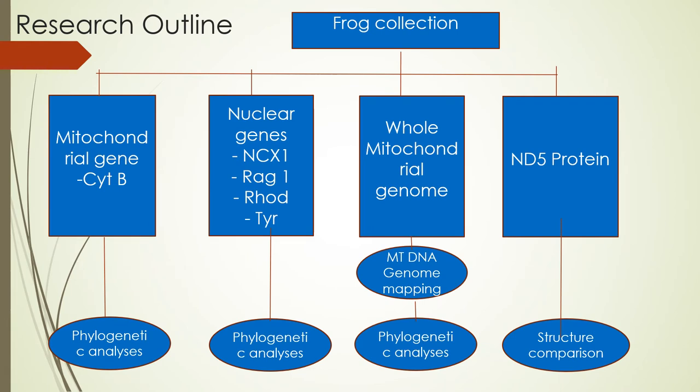This is the research outline. First is frog collection from Chinese and Thailand populations. For the mitochondrial gene we use cytB, and from this cytB gene we will do a phylogenetic analysis. For the nuclear genes we will use NCX1, REC1, ROT, and TRHD genes, and perform phylogenetic analysis. We also use the whole mitochondrial genome to do mtDNA genome mapping and phylogenetic analysis. Finally, from the ND5 protein we will do a structural comparison between the Chinese and Thailand populations.